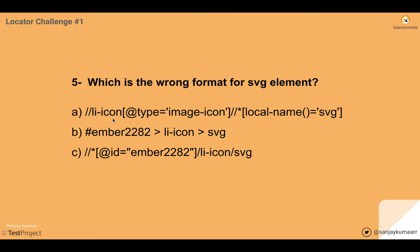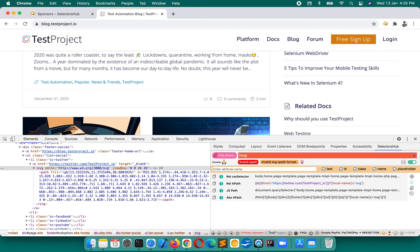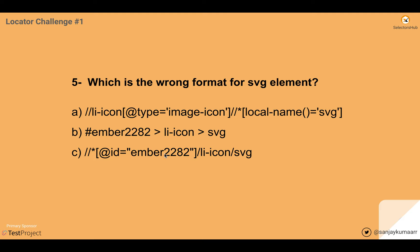Option A — double forward slash star, local-name equals svg — looks correct. Option B — a CSS selector with hashtag ID, arrow, tag name, arrow, tag name — this is a correct CSS selector format. Option C — double forward slash star, forward slash svg — this is wrong because for SVG we cannot write forward slash svg directly. If we write double forward slash svg in Selector Sub it says invalid SVG XPath format. So option C is the wrong format for SVG element.